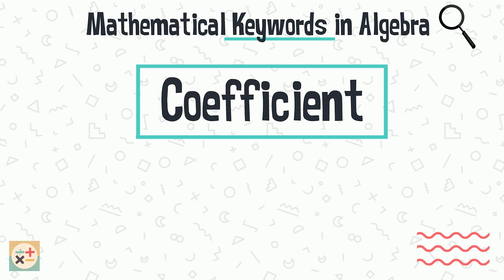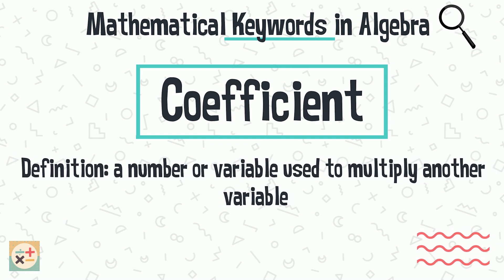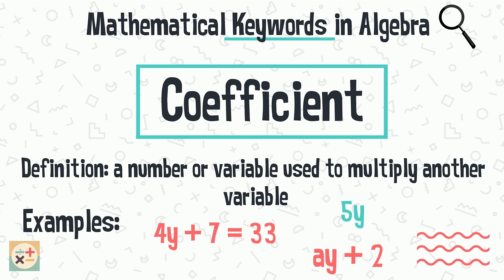A coefficient is a number or variable which is used to multiply another variable. In the below examples, 4, 5 and A are all coefficients as they show how many lots of Y there are.